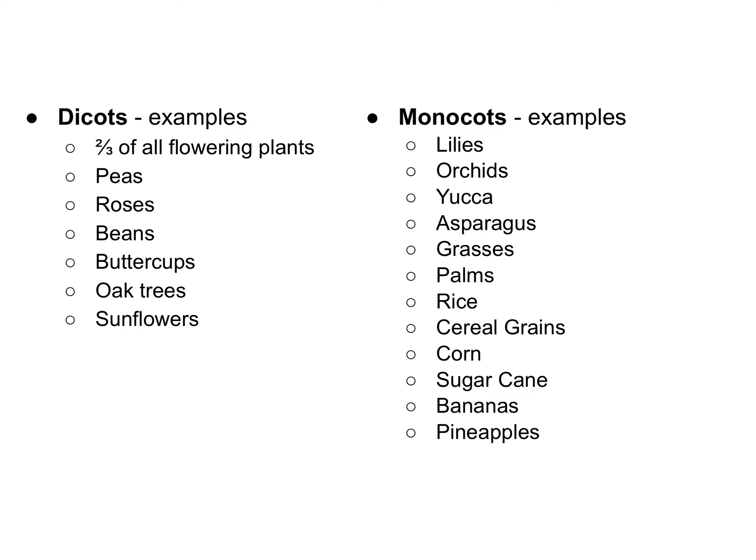Of the two types, dicots are more prevalent — two-thirds of all flowering plants are classified as dicots. Some common examples include peas, roses, beans, buttercups, oak trees, and sunflowers. Some examples of monocots include lilies, orchids, yucca, asparagus, grasses, palms, rice, cereal grains, corn, sugarcane, bananas, and pineapples.